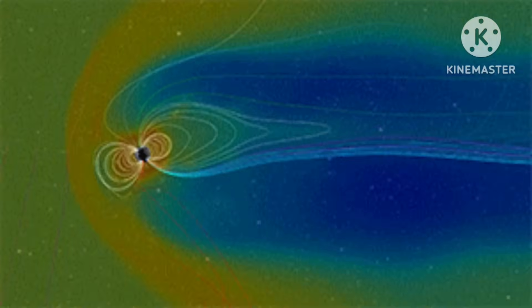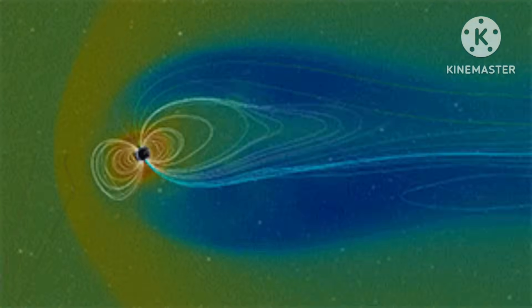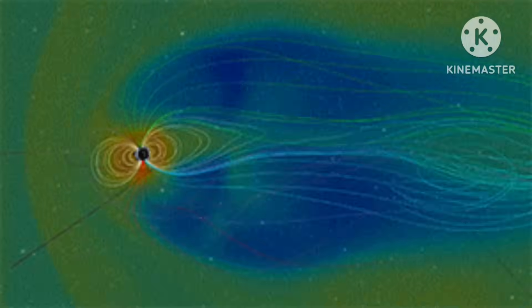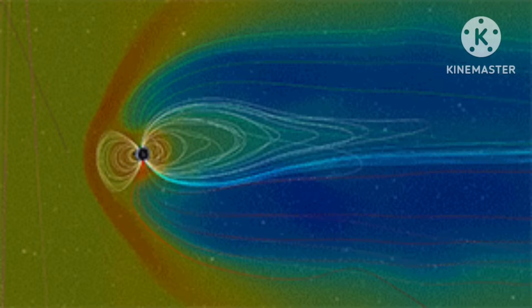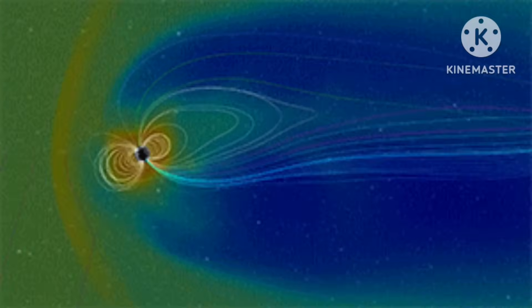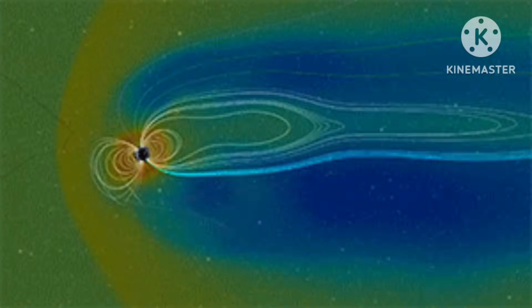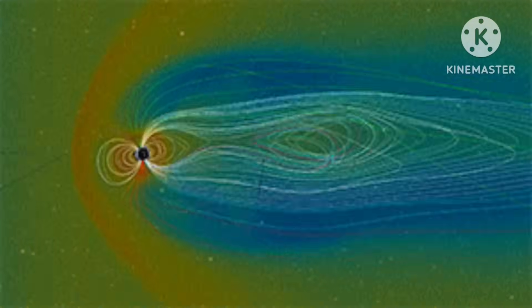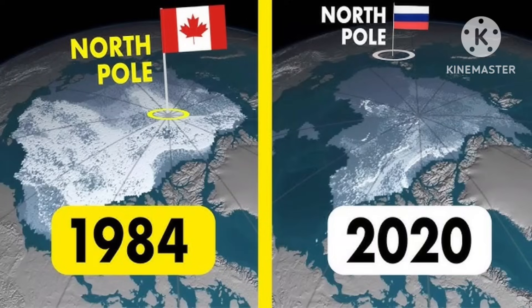Magnetic reversals don't happen overnight. Instead, for a period of many years the magnetic field becomes very unstable with poles appearing and disappearing all over the Earth. Eventually the poles settle at their new locations and become relatively stable for many thousands and sometimes even millions of years.